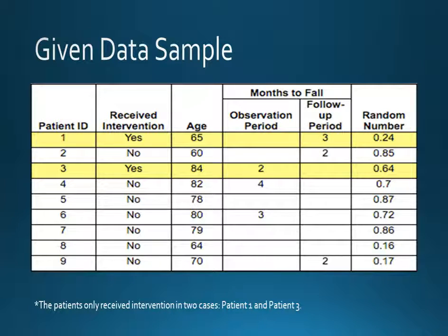As you can see, here is our given data sample, a screenshot of the chart provided to us. The rows for patient 1 and patient 3 are highlighted in yellow because they were the only patients out of the nine who received intervention for their medical problems.